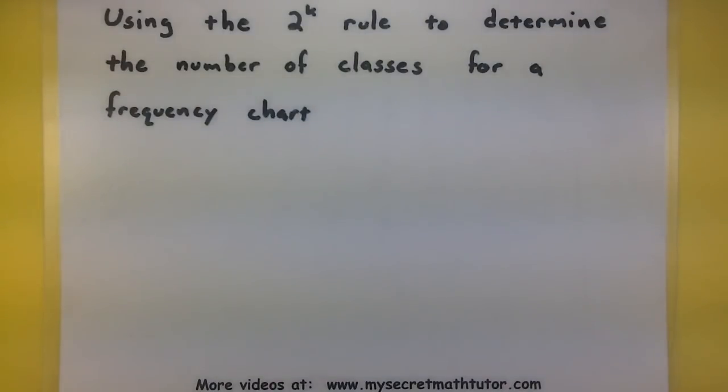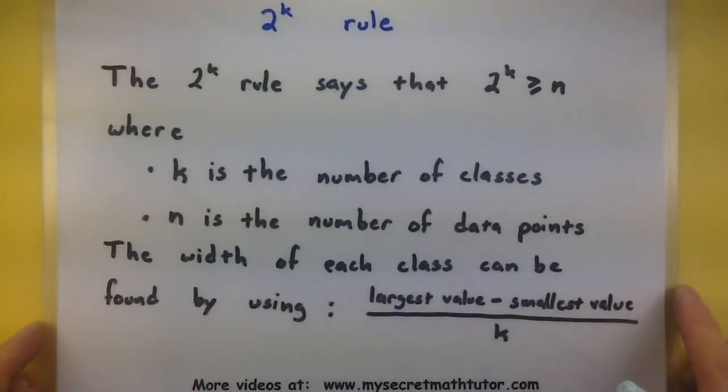So let's look at this rule more in detail to see exactly how it will help us. According to the 2^k rule, it says that 2^k must be greater than or equal to n. Now in this, k is the number of classes and n is the number of data points.